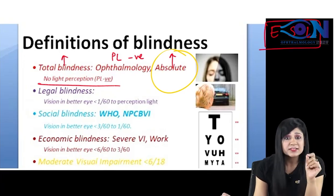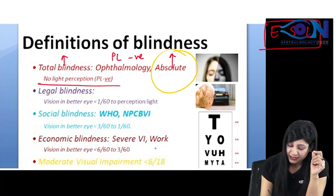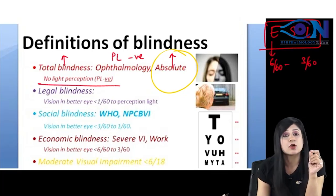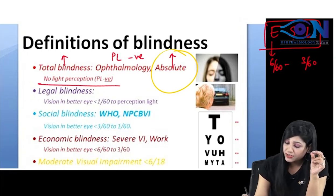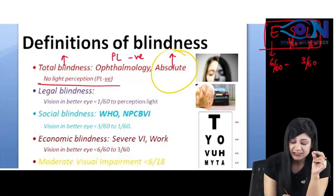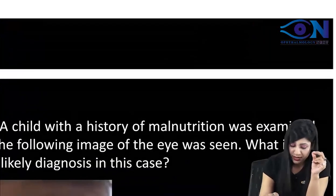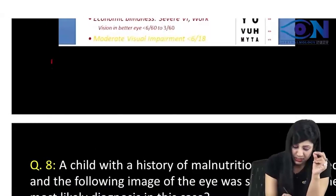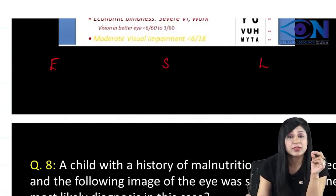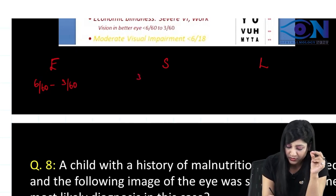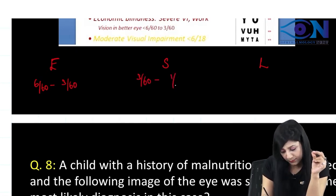Starting from 6 by 60: from 6 by 60 to 3 by 60 is economic blindness. Social blindness is from 3 by 60 to 1 by 60. Legal blindness is when vision is less than 1 by 60. So remember it as E, then S, then L — from 6 by 60 to 3 by 60, from 3 by 60 to 1 by 60, and less than 1 by 60.